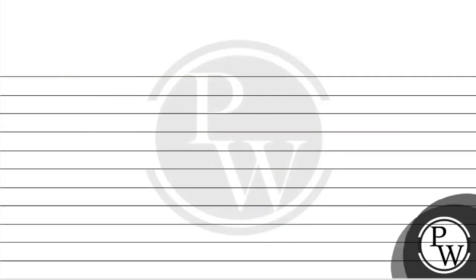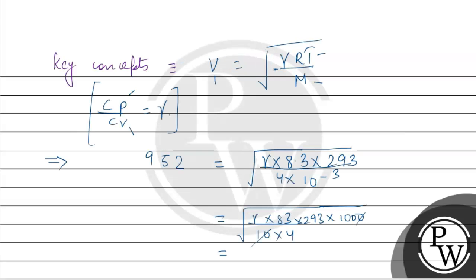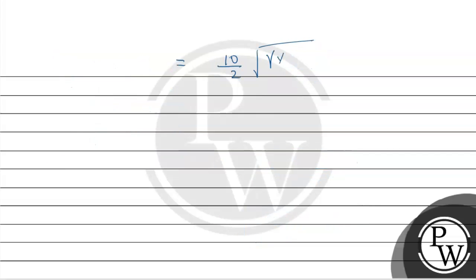If we remove root from the root, it will come 10 by 2, and in the root gamma, and 8.3 into 293, 8.3 into 293.